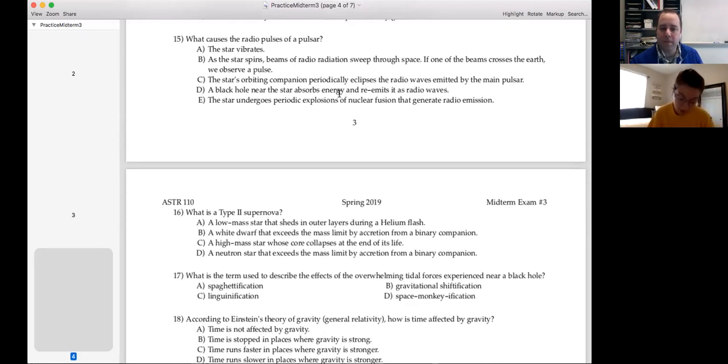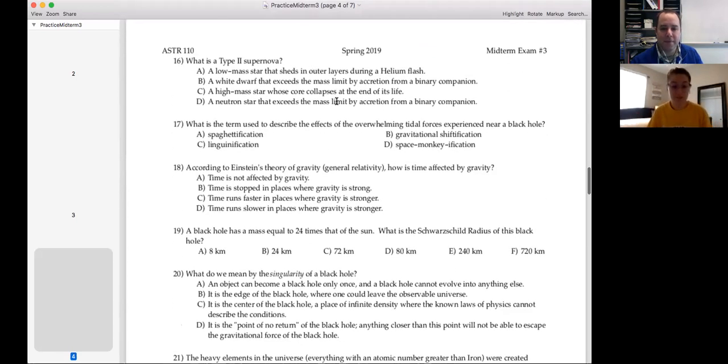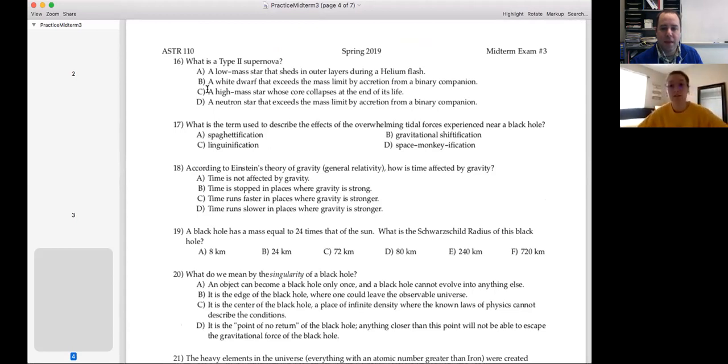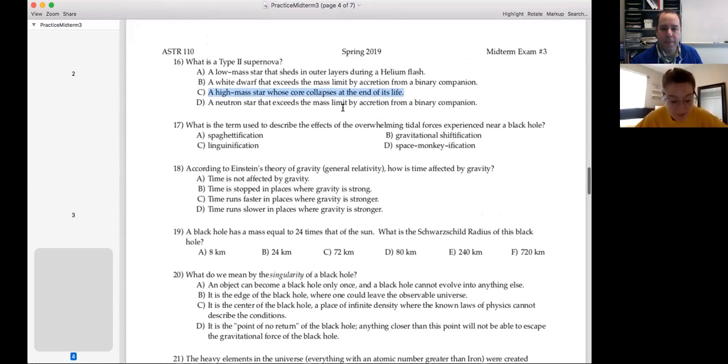For 15, I put B. Yep. Okay. For 16, I put C. Yep. Okay. 17, I put B. No, it's A. It's spaghettification is the process of getting stretched out and squeezed together as you get near a black hole. It turns everything into spaghetti. And can you actually just repeat what that process is again? Sure.